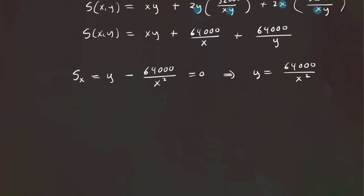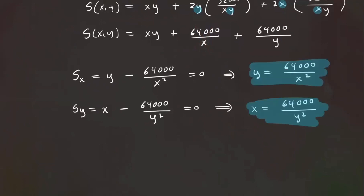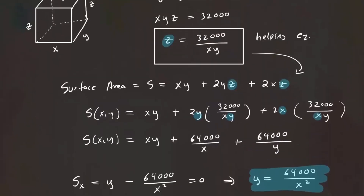Now let's take the partial derivative of S with respect to Y. The first term XY gives X (treating X as a constant), and the second term 64,000/X is treated as a constant giving zero, minus 64,000 over Y squared. Setting it to zero gives X = 64,000 over Y squared. Now we have two equations and we'll substitute to solve for X and Y, then plug back into the helping equation to get Z.